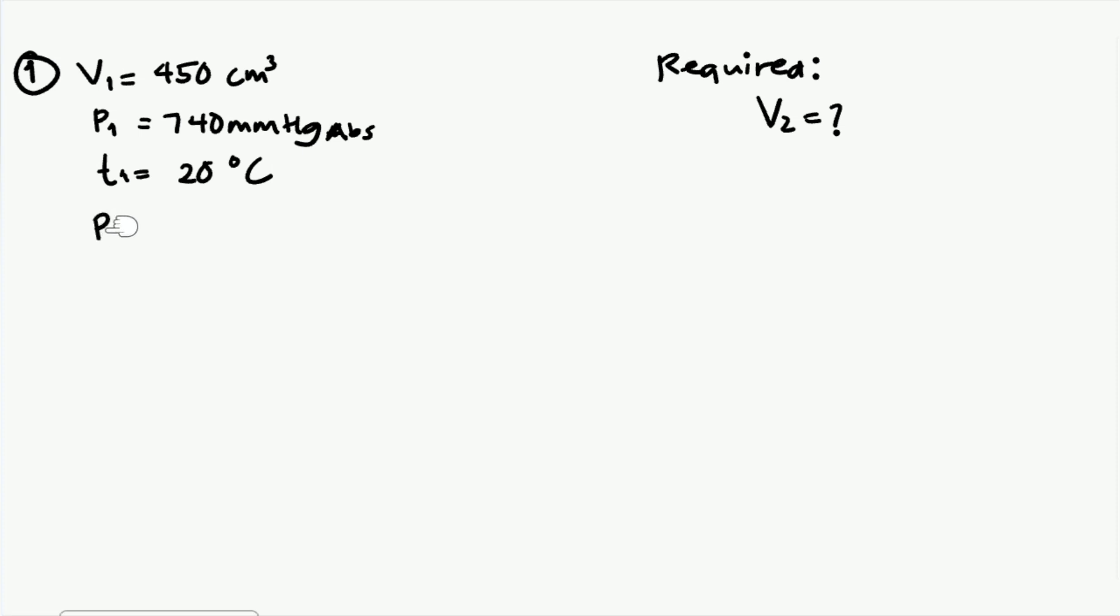When given pressure at point two is 760 millimeters of mercury absolute, and temperature at point two is zero degree Celsius. So solution for this, we'll use the combined gas law. So P1 V1 over T1 is equals to P2 V2 over T2. Our temperatures must be absolute.